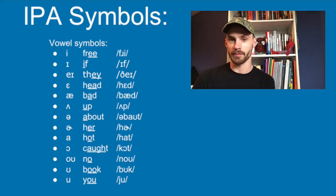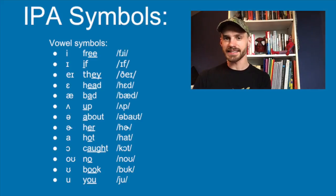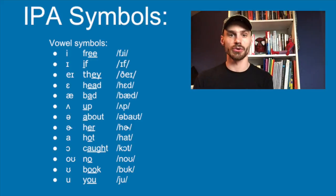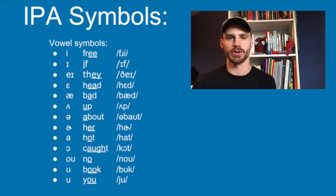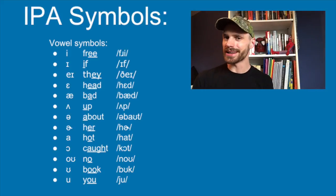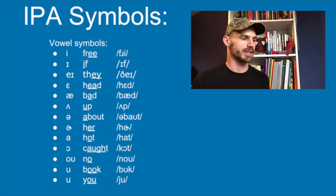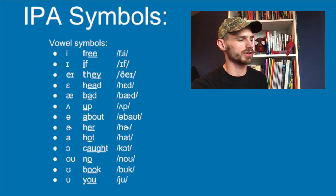Then we have 'a' as in 'hot,' and 'aw' as in 'caught.' If you're from California, you might not distinguish those two vowels — you might pronounce 'cot' and 'caught' the same way, and that's okay. But the difference between the two sounds is 'ah' versus 'aw.' It took me a long time to hear the difference, but after a lot of practice listening I did realize I pronounce those differently. Moving on: 'o' is what that symbol looks like, and there's a horseshoe-shaped symbol for 'oo,' and then 'u' as in 'you.'